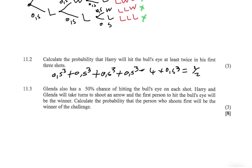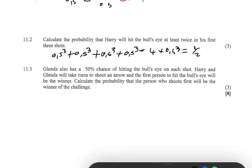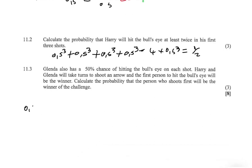Let's assume Harry Maguire takes the first shot. The probability of Harry Maguire hitting the bull's eye is 0.5, since they all have a 50% chance. Then Glenda takes a shot and she also has a 0.5 chance of hitting the bull's eye. But Glenda needs Maguire to miss his shot first, and then she multiplies that by the probability of her hitting the bull's eye, because in order for Glenda to take that shot, Maguire has to miss first.